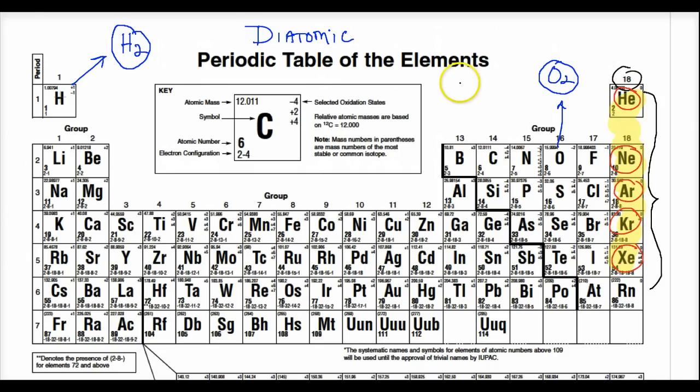But there are a bunch of elements that love to bond with themselves, so let's write them. So we're going to have hydrogen, we have oxygen, fluorine.